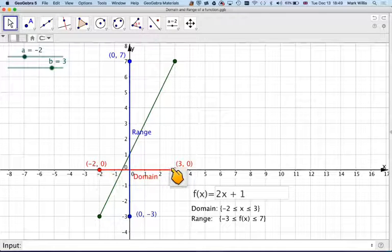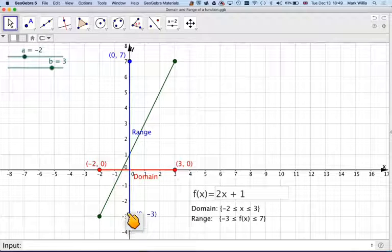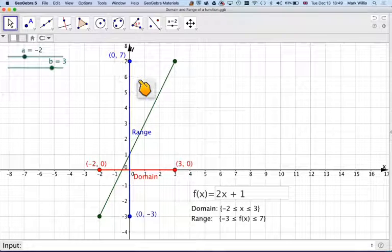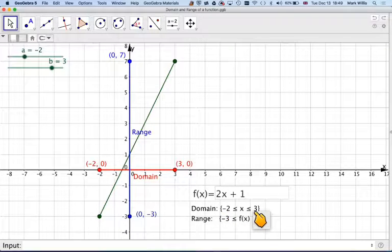So the domain is the red one here. Now the set of values you get out are the blue ones here. So the set of values we get are from minus 3 to 7, so anything between minus 3 and 7. And the domain here is from minus 2 to 3.